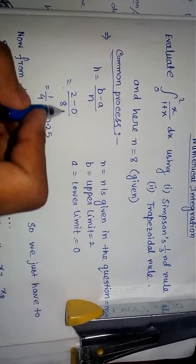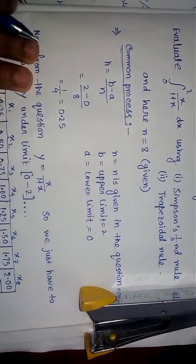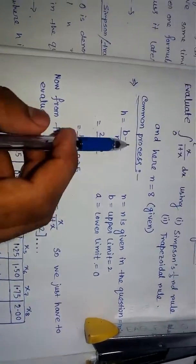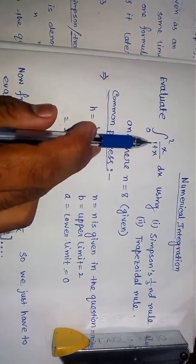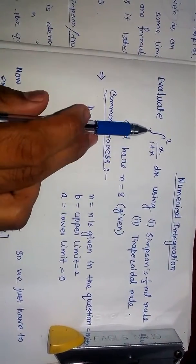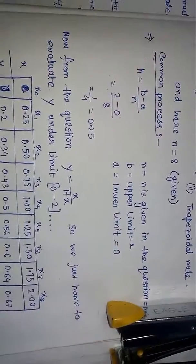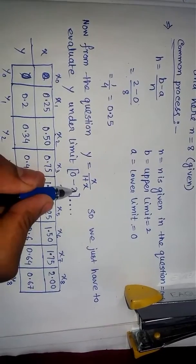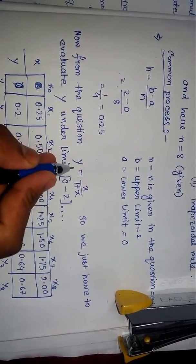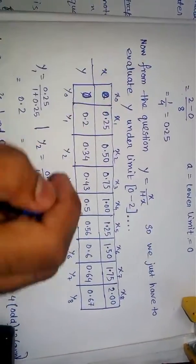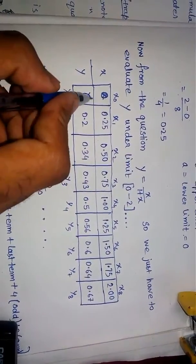So I just put it down here: b minus a by n. So that is 1/4, which is 0.25. We can see that in the equation it is given x/(1+x). So what we have to do is calculate and evaluate it. I have taken y equals x/(1+x) and we have to evaluate this y under the limit 0 to 2.